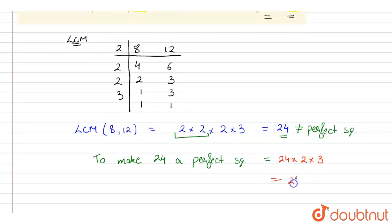3 into 2 is 6, so 24 into 6 that will be equal to 144.